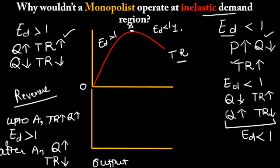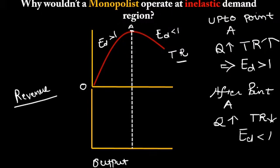Now I want to find the marginal revenue curve based on total revenue. I've extended the output line from point A down to the second figure — that is our output level. The marginal revenue curve is a downward-sloping curve, so let us draw the marginal revenue curve for the firm. This blue curve is our marginal revenue curve.